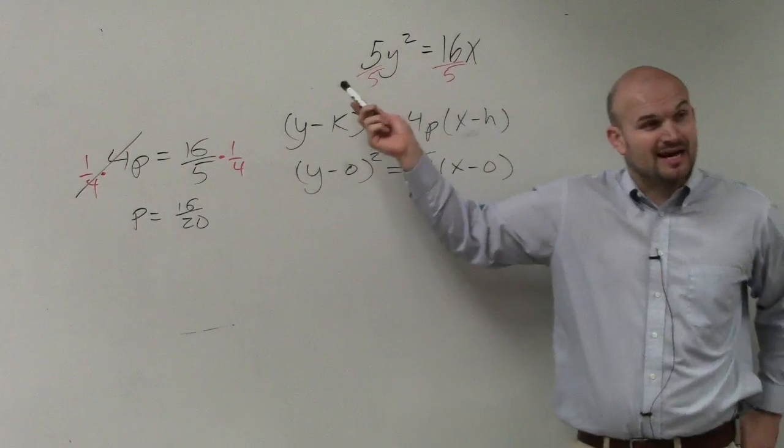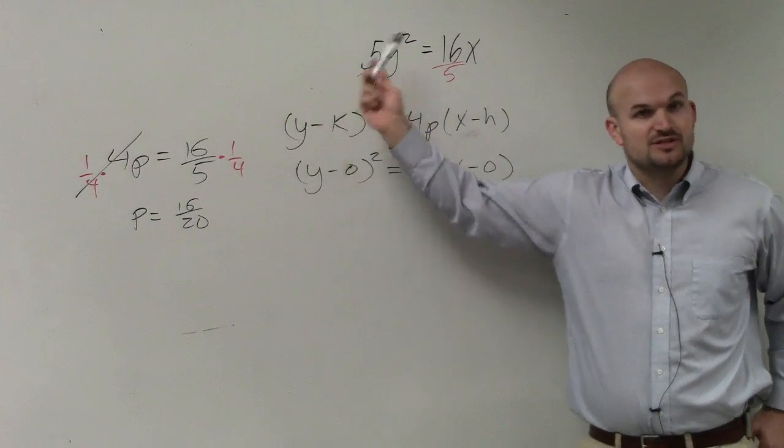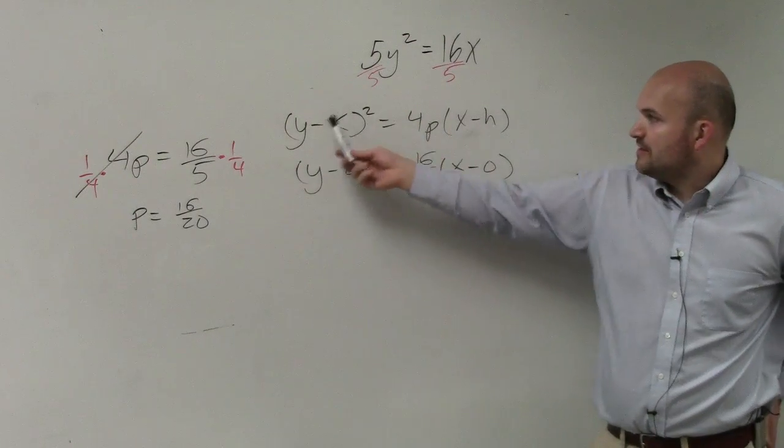To put this in the proper form, the main important thing is we didn't want to have any coefficients of our squared term. So we divide by 5 on both sides. Therefore, we had it in this format.